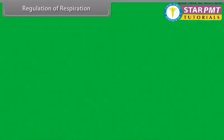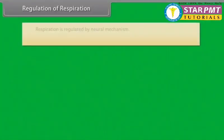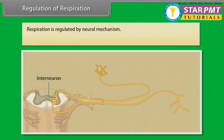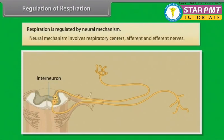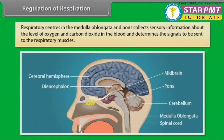Regulation of respiration. Respiration is regulated by a neural mechanism, which involves respiratory centers and afferent and efferent nerves. Respiratory centers in the medulla oblongata and pons collect sensory information about the levels of oxygen and carbon dioxide in the blood, and determine the signals to be sent to the respiratory muscles.